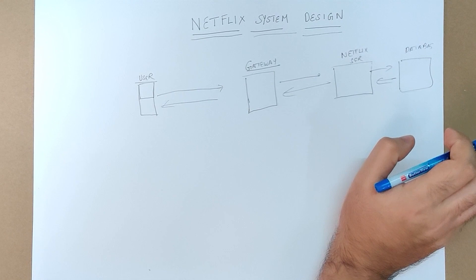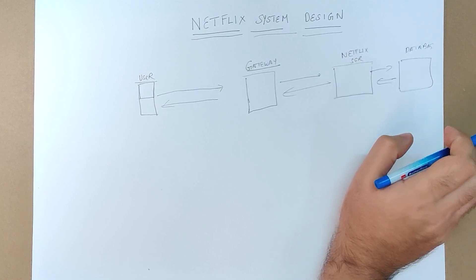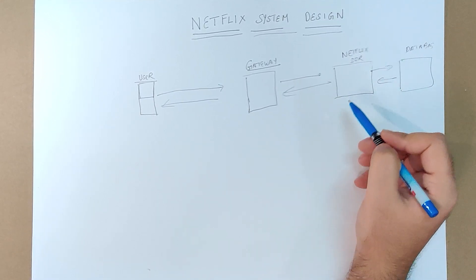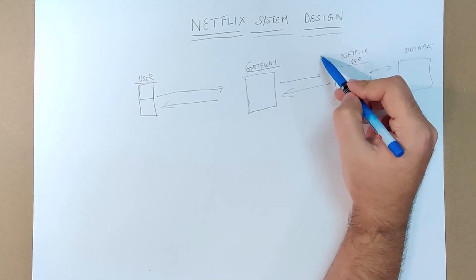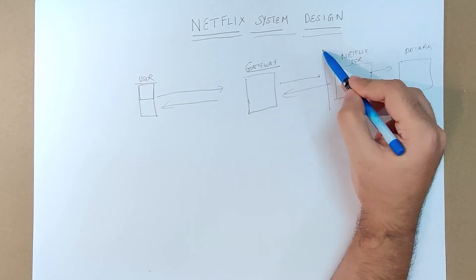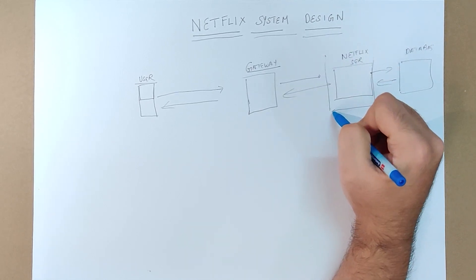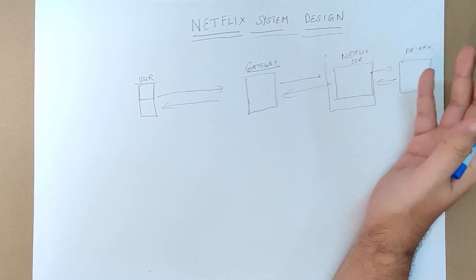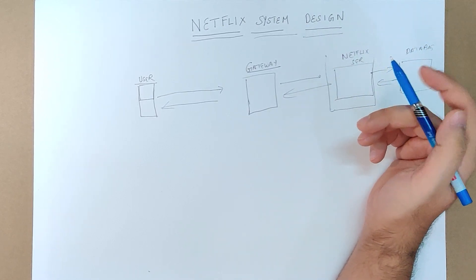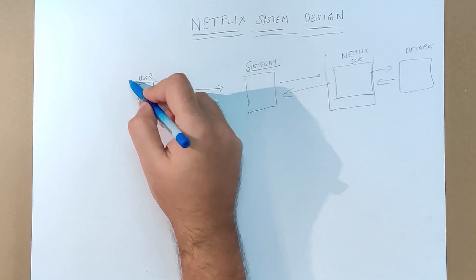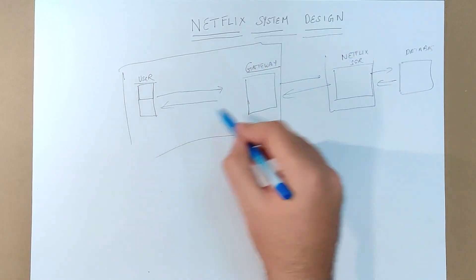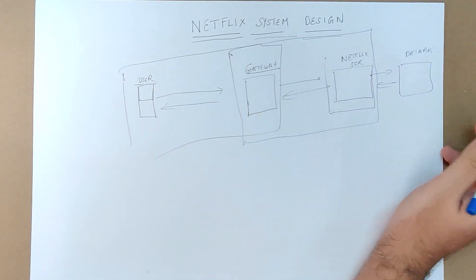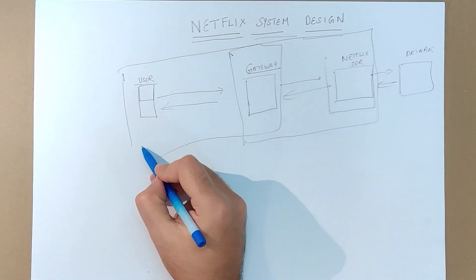In each component there are a lot of different things. Generally, in what I have seen in a lot of articles and videos, people just cover how the Netflix servers are arranged and how the calls are going in. But no one actually talks about what is going on in the user part and the database part. There are actually a lot of things going on in these parts.